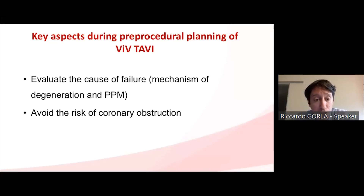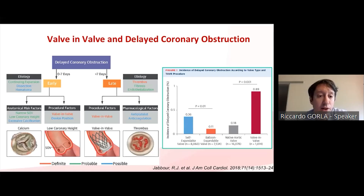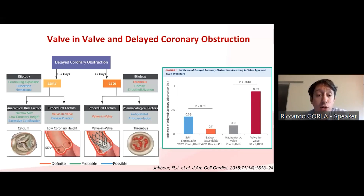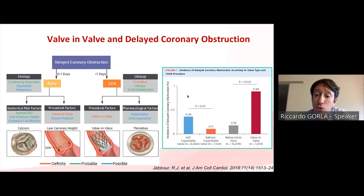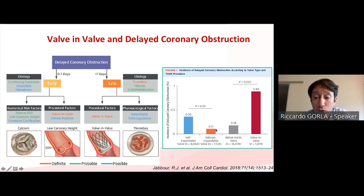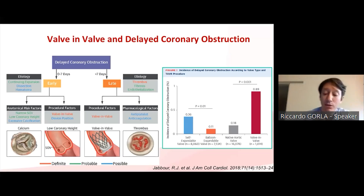Delayed coronary obstruction has been clearly associated with valve-in-valve procedures. Coronary obstruction can occur acutely right after valve implantation or several days after the intervention. Self-expanding devices have been shown to carry a higher risk of coronary obstruction compared to balloon-expandable devices, mainly because self-expanding devices — when this study was performed with Evolute — are supranular valves, making them riskier in terms of coronary obstruction.